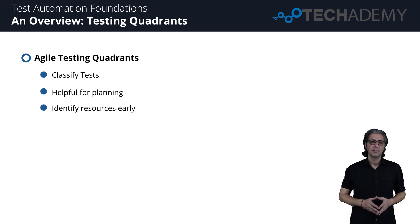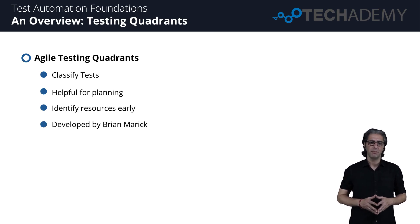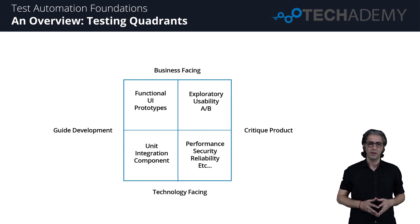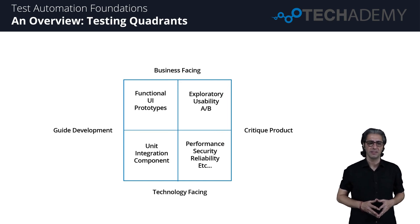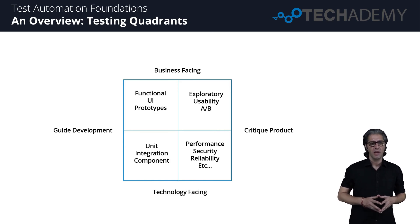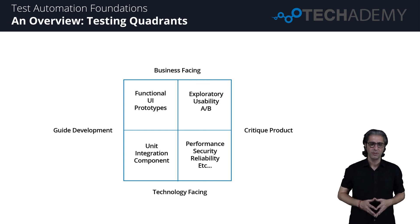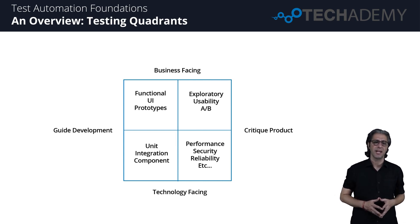The Agile Testing Quadrants model also helps teams identify the resources necessary to accomplish that task. This model was developed by agile testing consultant Brian Marrick in 2003. There are four distinct quadrants separated by the x and y axes. On the bottom are technology-facing tests, on the top are business-facing tests. On the left are tests that guide development, and on the right are tests that critique the product.